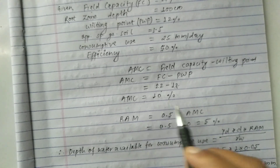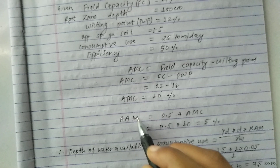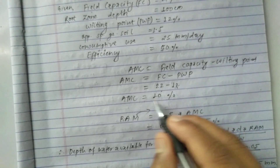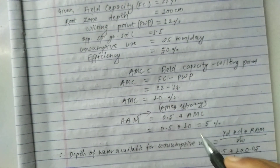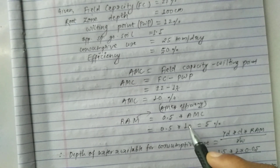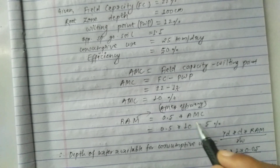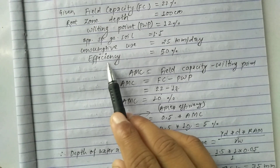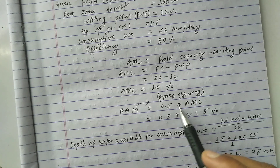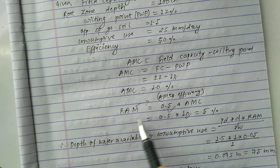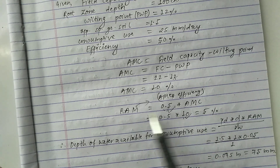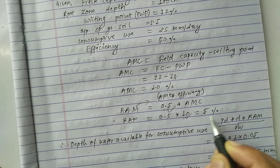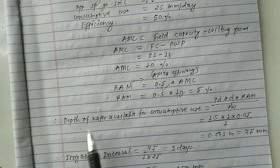To calculate RAM, we multiply AMC by the irrigation efficiency. AMC = 10% and efficiency = 50%, which in decimal is 0.5. So RAM = 10 × 0.5 = 5%.